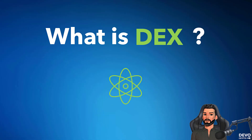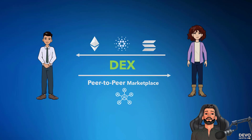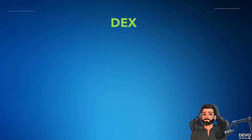What is a DEX in one minute? A DEX stands for a decentralized exchange. It is a peer-to-peer market where transactions occur directly between crypto traders. DEXs fulfill one of crypto's core fundamentals, fostering financial transactions that are not officiated by banks, brokers, or any other intermediary.